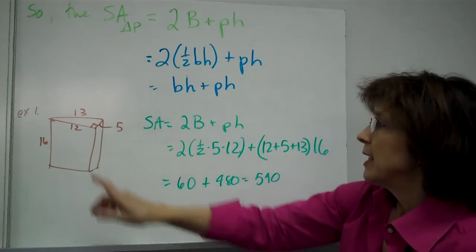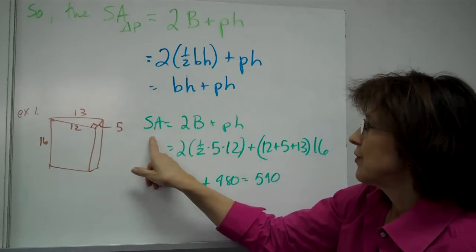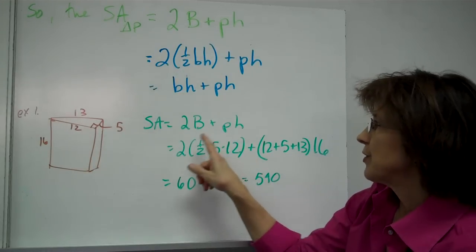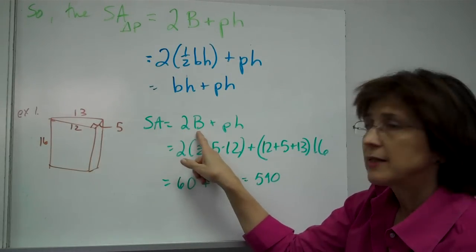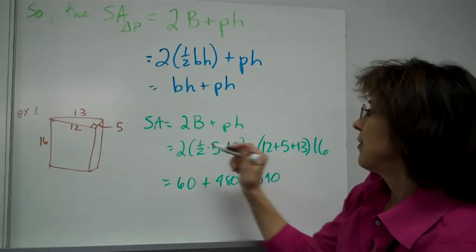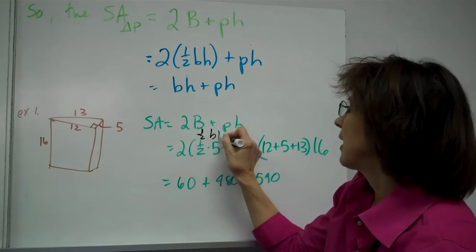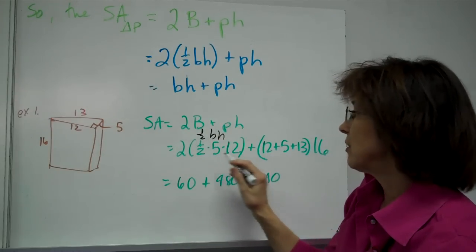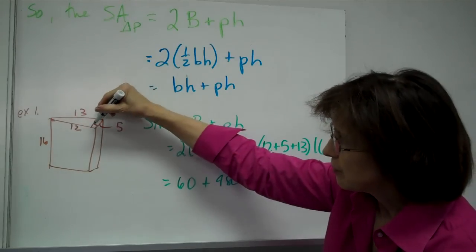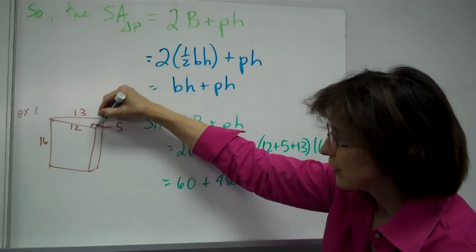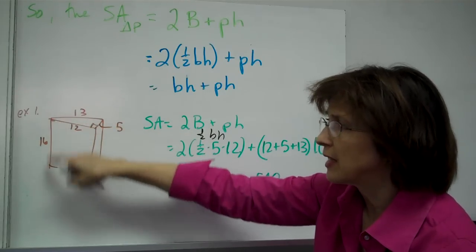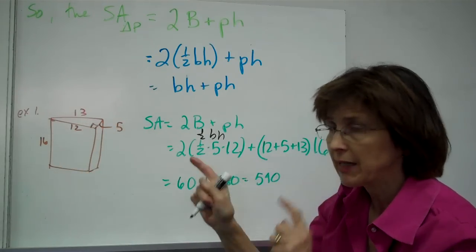For example one of surface area: surface area equals 2B plus PH, so you write down 2 times the area of the base — which is one half the base times the height of the triangle — plus P times H. Here's my triangle with the little box. You always want to be looking for that box, and for the side that connects the two triangles, because you need them later.